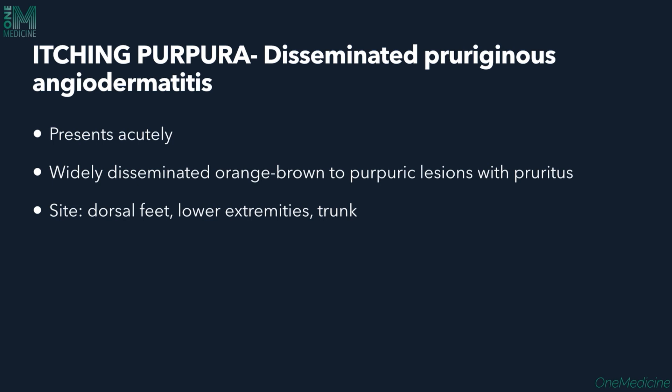Itching purpura — also called disseminated pruriginous angiodermatitis — presents acutely with widely disseminated orange to brown purpuric lesions with pruritus.